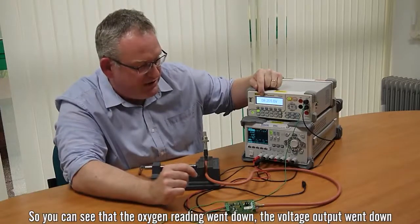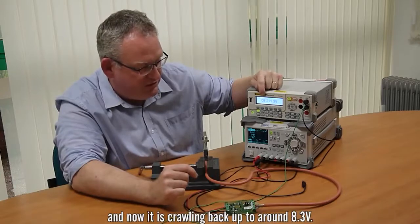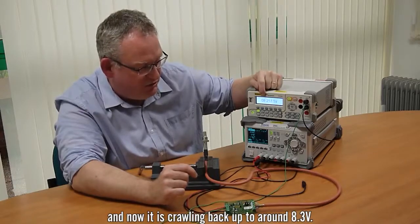So you can see the oxygen really went down, the voltage output went down and now it's crawling back up to around 8.3 volts.